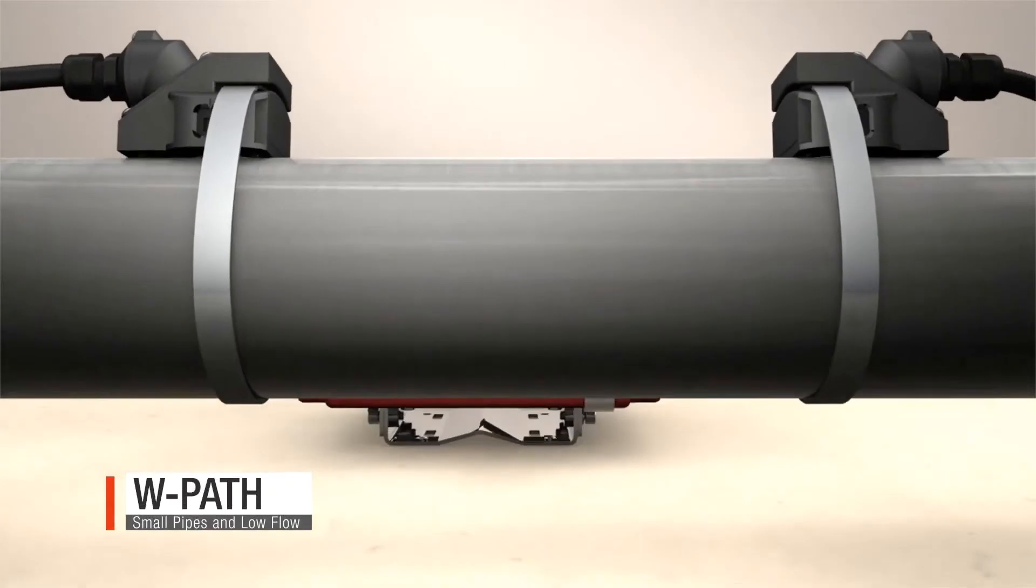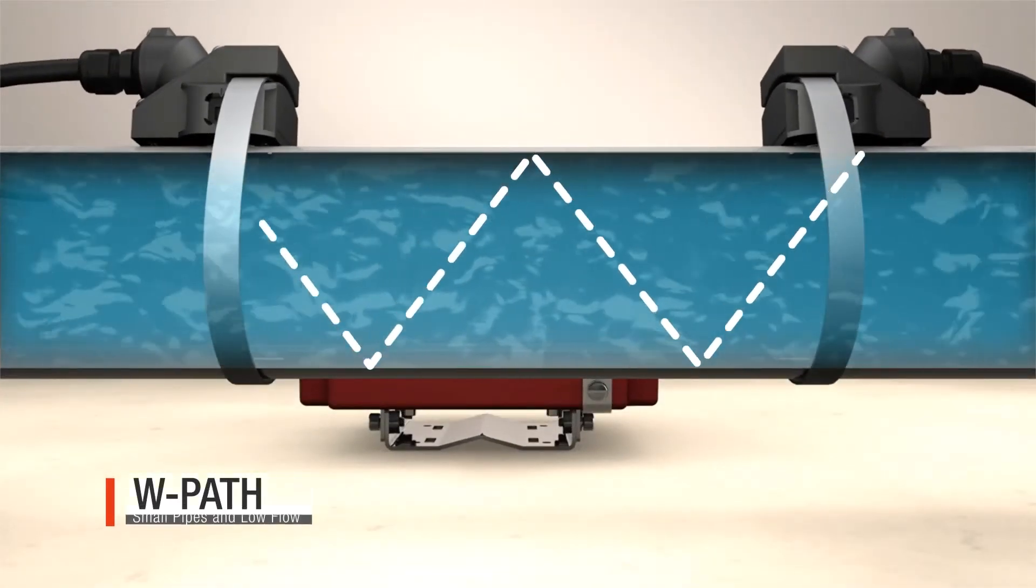A W path or 4 traverse is ideal for smaller sized pipes and low flow measurement.